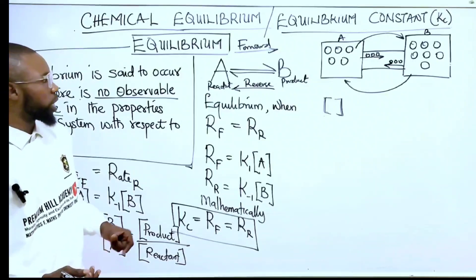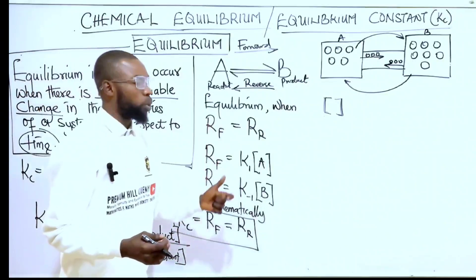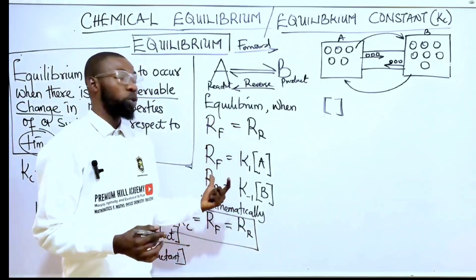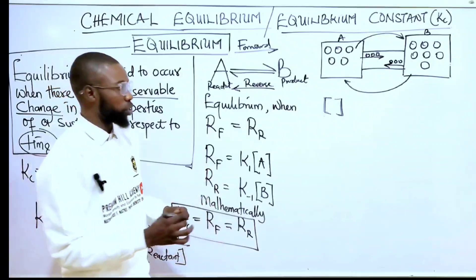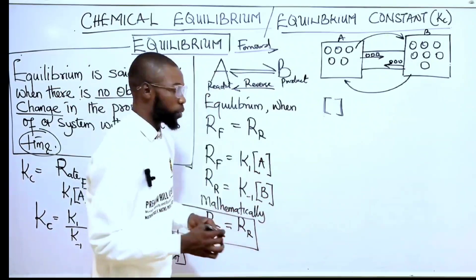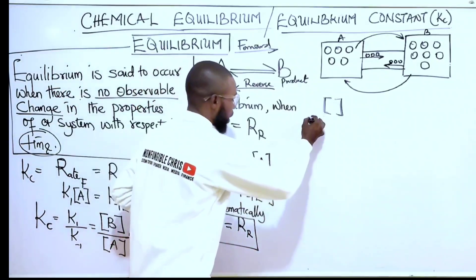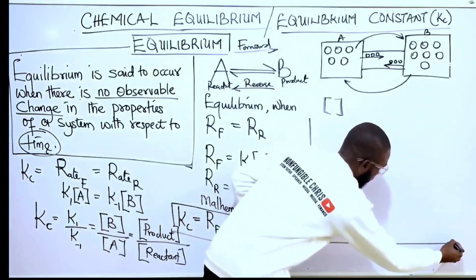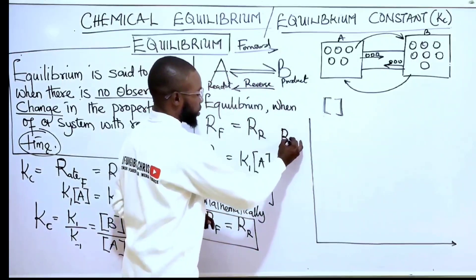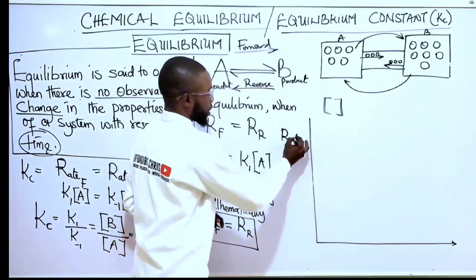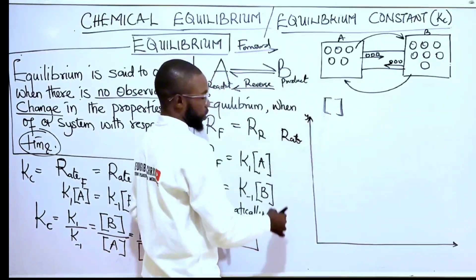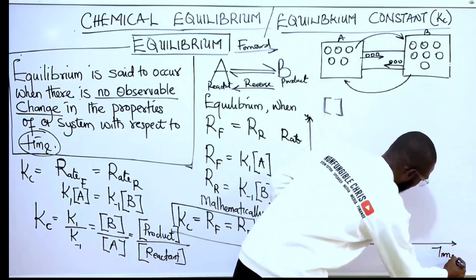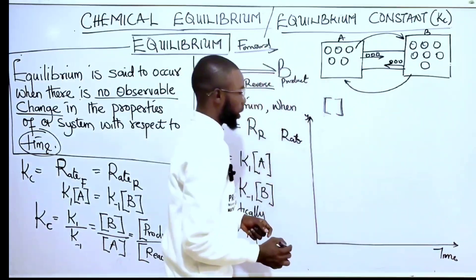Let's use the graph to explain that. If we have a graph with rate on the y-axis and time on the x-axis — for our reversible reaction A converting to B and B converting to A — let's assume we start with three moles of A and zero moles of B.